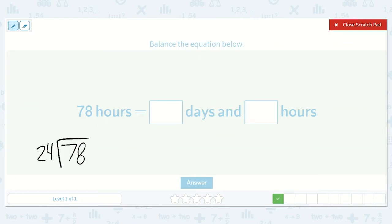Let's see, 24 once is 24, 24 twice is 48, 24 three times is 72. And then we subtract eight minus two is six, and then seven minus seven is zero. Well I know that 24 can't fit into six, so we are done with that.